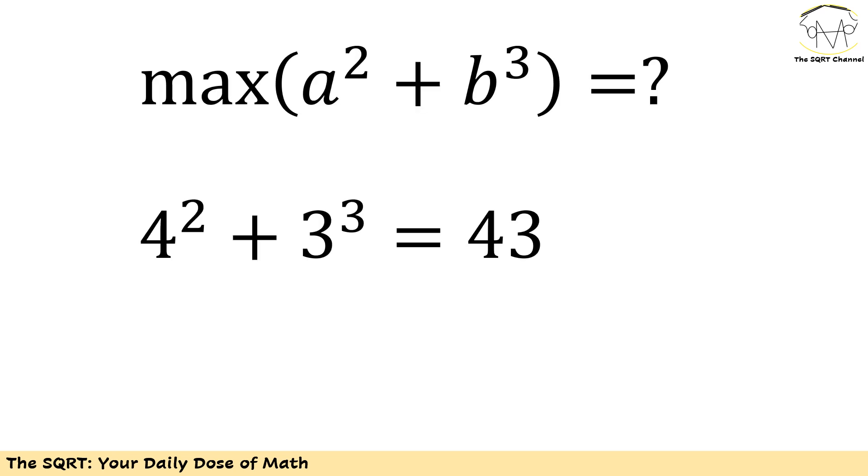Now we need to find the maximum of a² plus b³. Since we only have one set it's going to be 4² plus 3³ which is 43 and we are done.